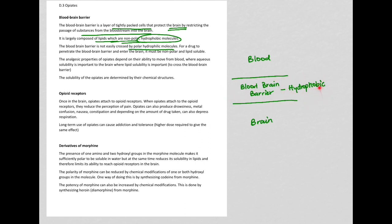The analgesic properties of opiates depend on their ability to move from the blood, where solubility is important, into the brain. For this process, it's important that the molecule is largely hydrophobic to be able to cross this barrier.